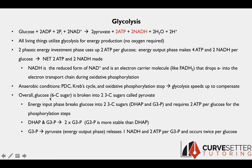Overall, in glycolysis, a six-carbon sugar glucose is broken down into two three-carbon sugars called pyruvate. The energy input phase breaks glucose into two three-carbon sugars — specifically dihydroxyacetone phosphate and glyceraldehyde-3-phosphate, often abbreviated as DHAP and G3P. The energy input requires two ATP per glucose, specifically for phosphorylation of the molecules.